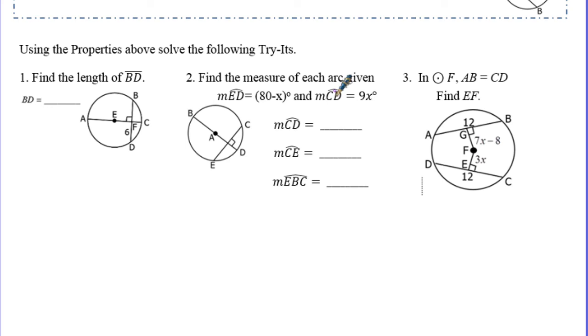The last little thing here says that in the same circle or in congruent circles, two chords are congruent if and only if they are equidistant from the center. If I told you that AB was congruent to CD, that would be true if and only if GE, this little piece here, is equal to or congruent to EF.